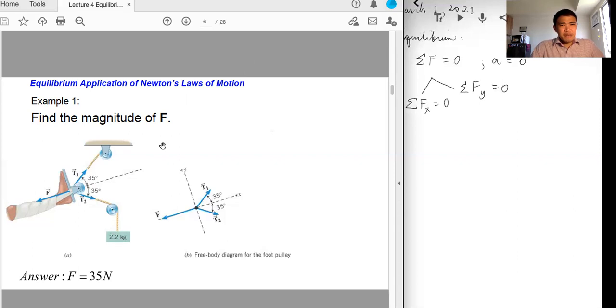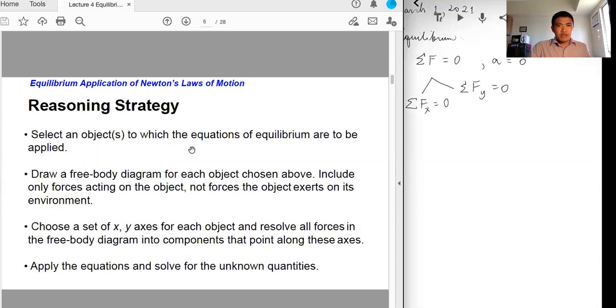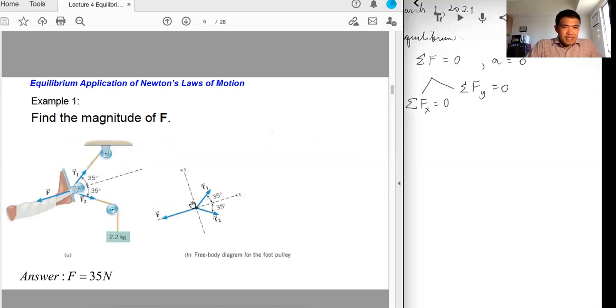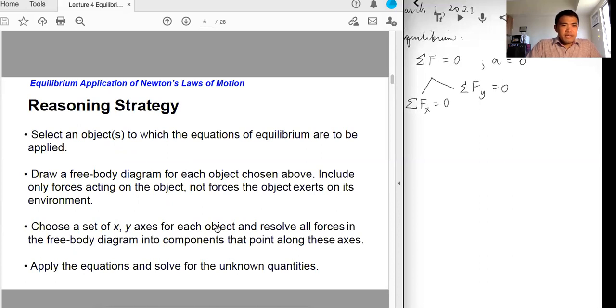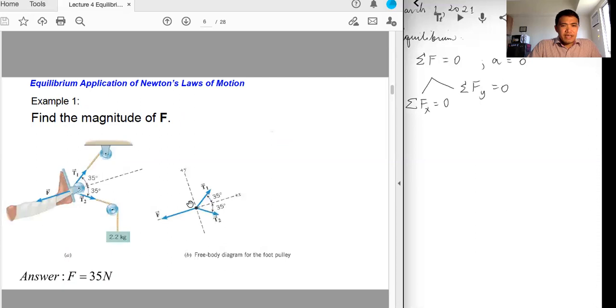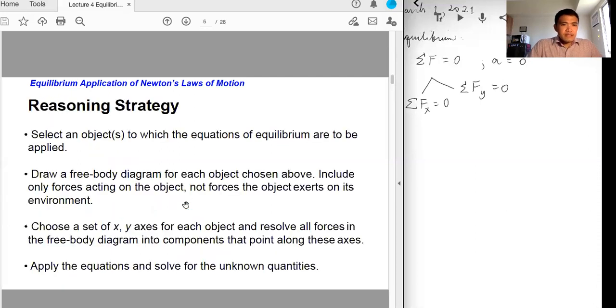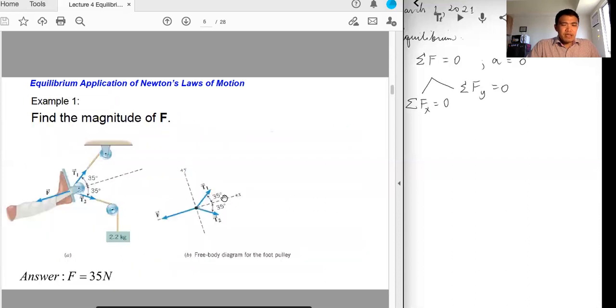This is usually done in orthopedic centers or departments in the hospital. So in example, they're given the mass of the weight, and then not given T1 and not given T2. And then we were asked to find the value for F. Select an object to which the equations of equilibrium are to be applied. So our object here would be the center point. So that's why the free body diagram is only drawn as this. You have force F, you have T1, you have T2.